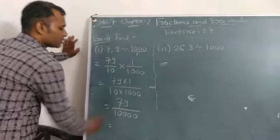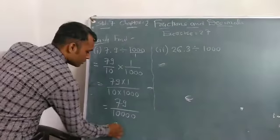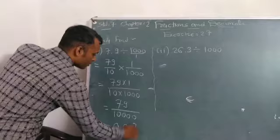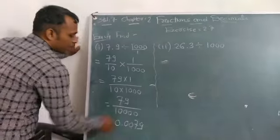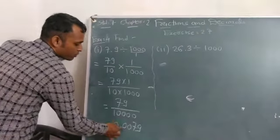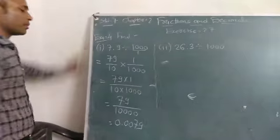So now, 79 upon 10,000 is 0.0079. There are 4 zeros. So, 1, 2, 3 add 4 numbers.